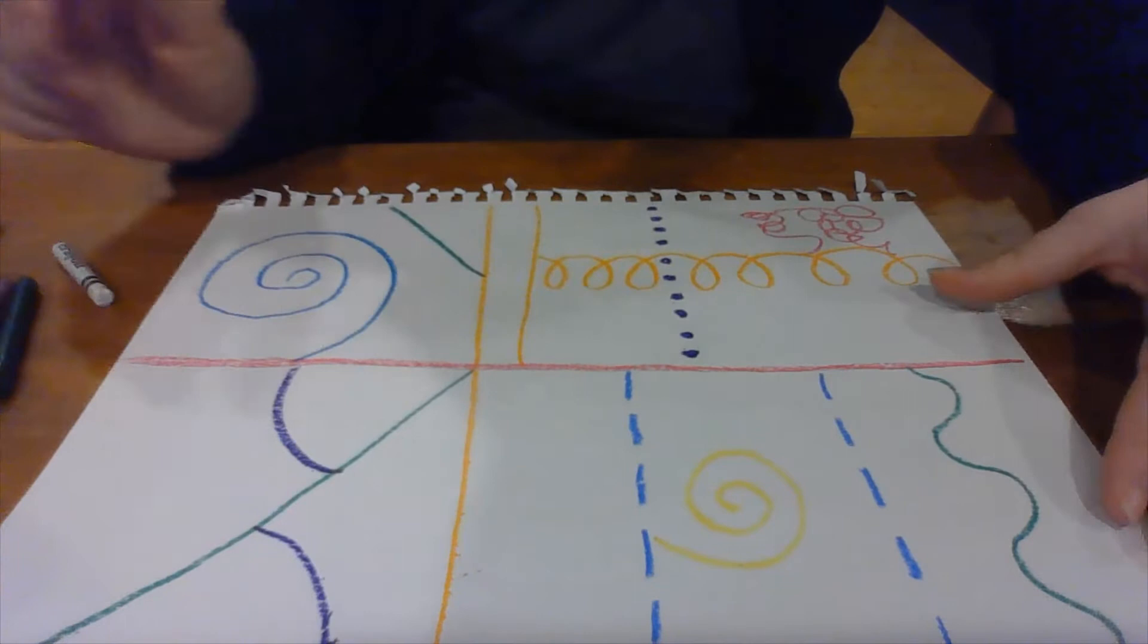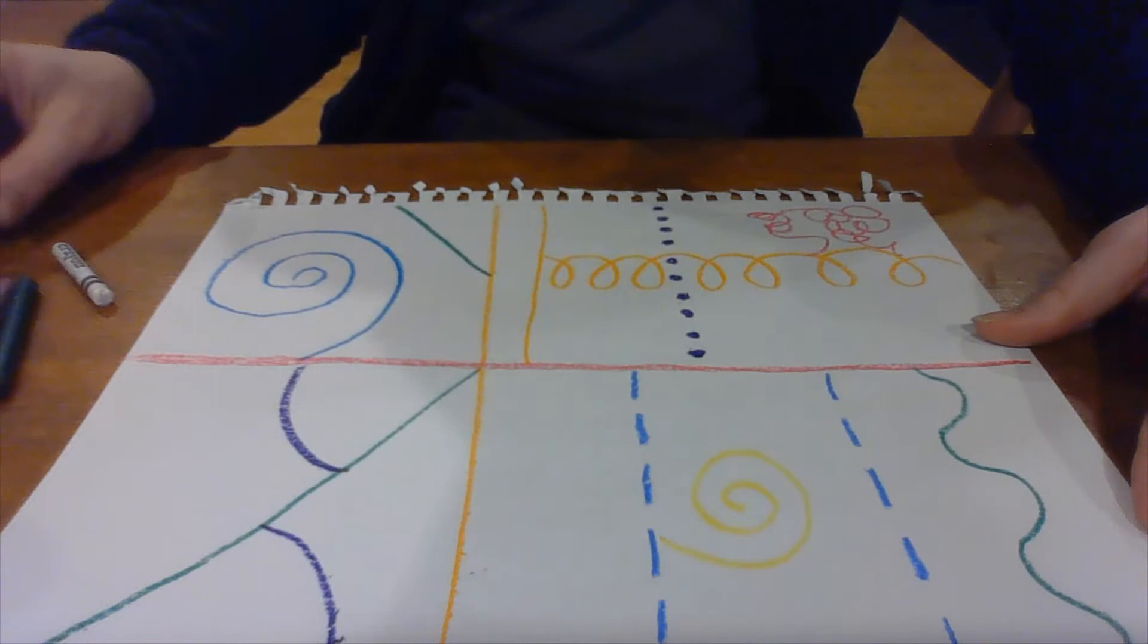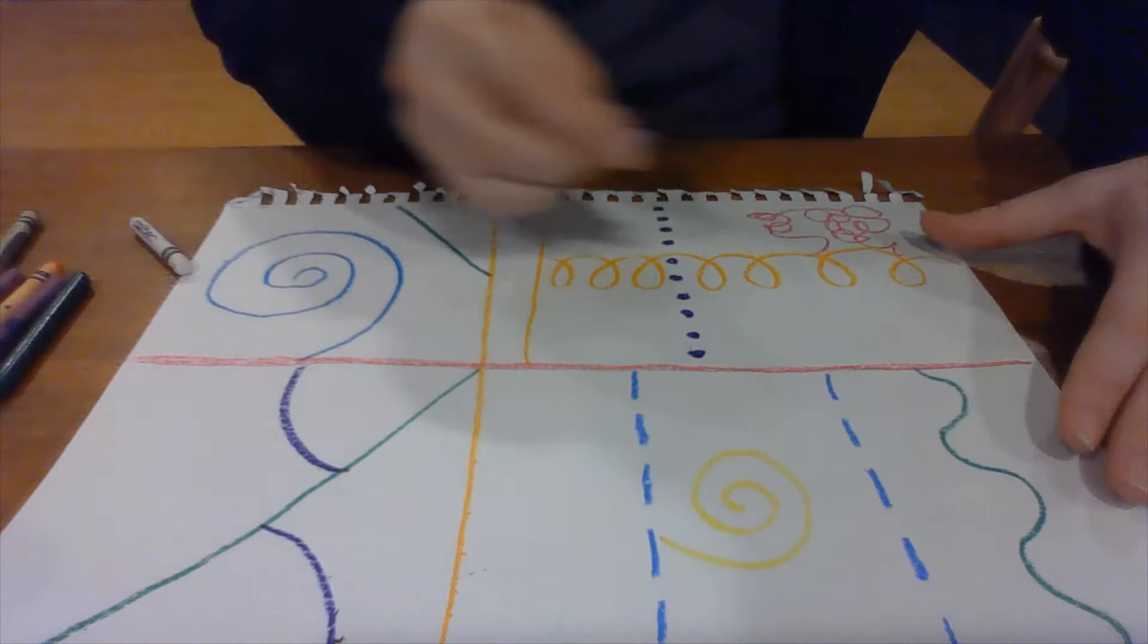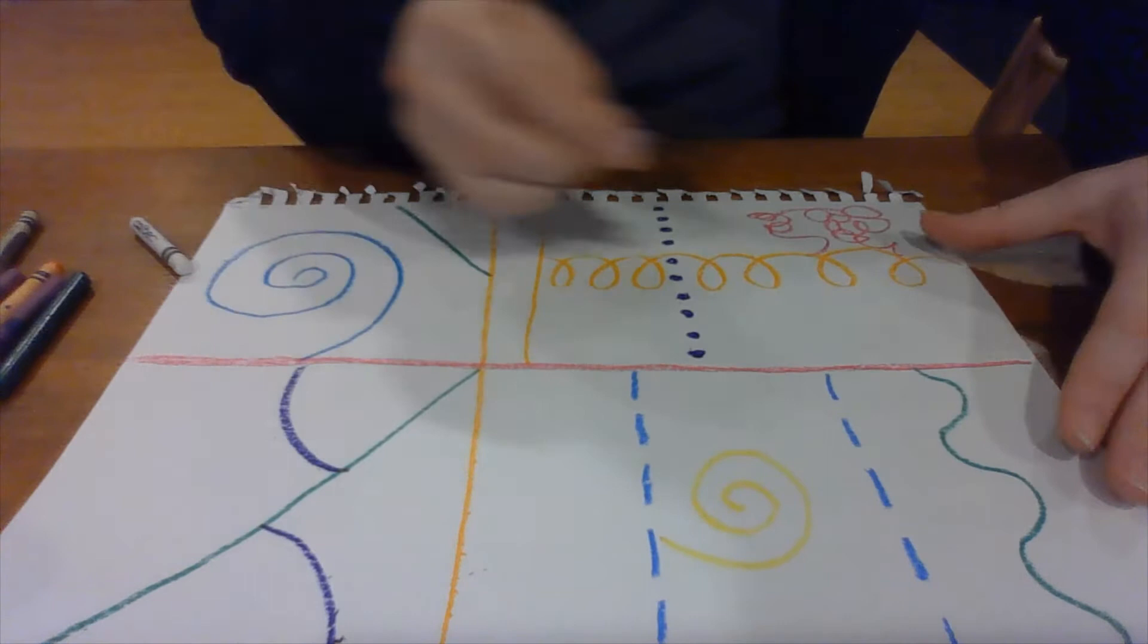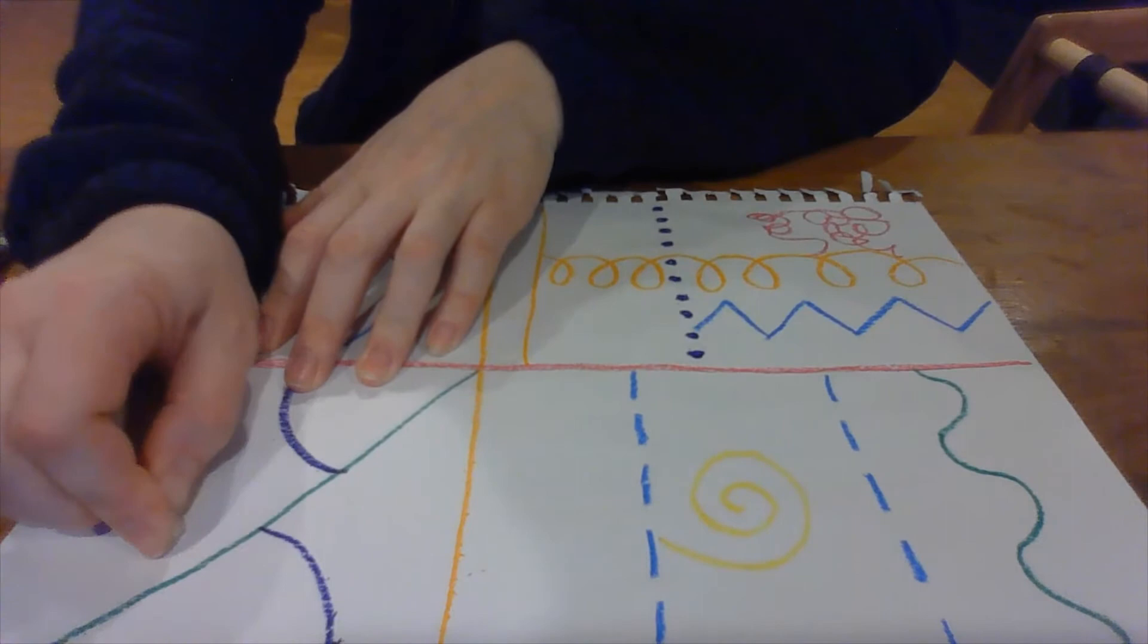The last line that I almost forgot is a zigzag line. That's like your diagonal lines, but they're kind of connected and they go back and forth. So maybe I can put a zigzag line here. And I think I will put one maybe with the white over here.